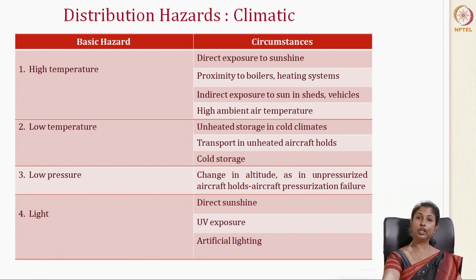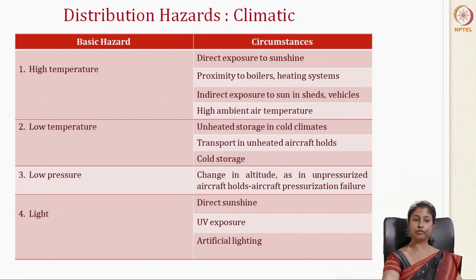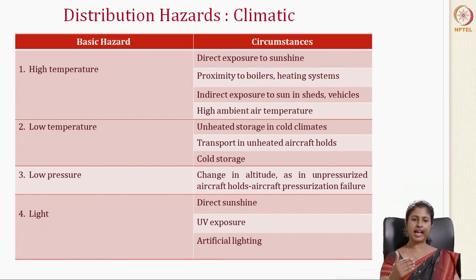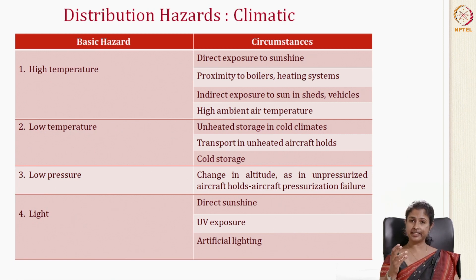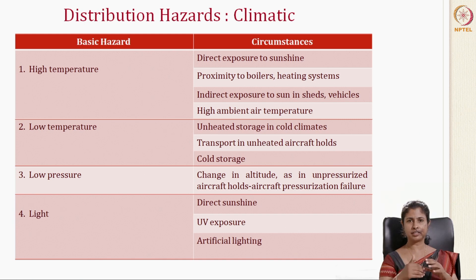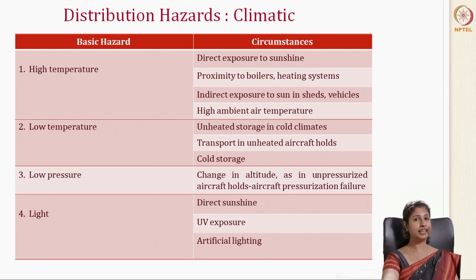Another distribution hazard is low temperature — in winter seasons or cold areas, unheated storage in cold climates, and transport in unheated aircraft or cold storage can all lead to distribution hazards. Low pressure is another, very common in aircraft — a change in altitude in an unpressurized aircraft or pressurization failure can lead to bursting, compression, or deformation of packaging. Light is another hazard — direct sunshine, UV exposure, or artificial light can affect transparent containers or accessories directly exposed to sunshine.